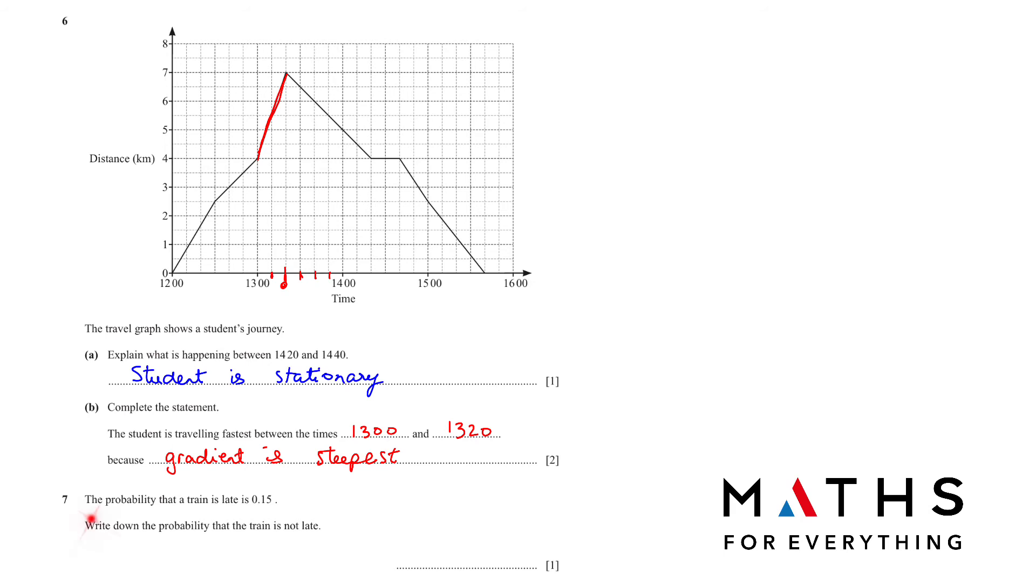Question number 7. The probability that a train is late is 0.15. Write down the probability that train is not late. The train being late and not late, the probability is always 1. So if you have the probability of something and you want to find of not, you just minus it from 1. So 1 minus 0.15 is the answer, 0.85. Remember, probability of something happening plus probability of something not happening is equal to 1.